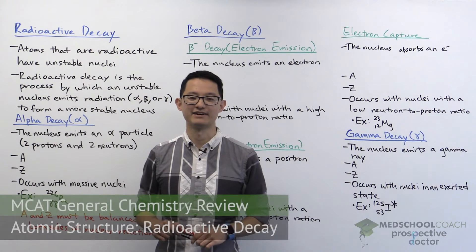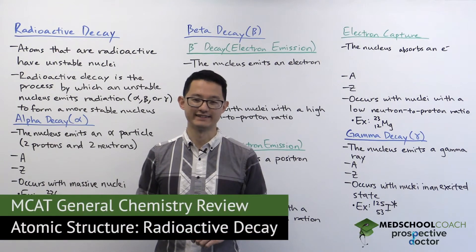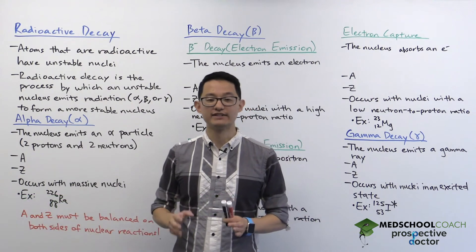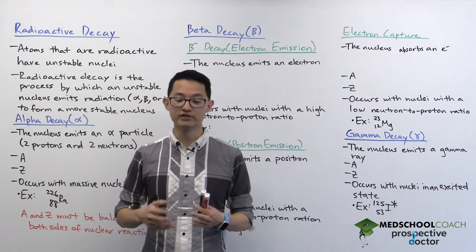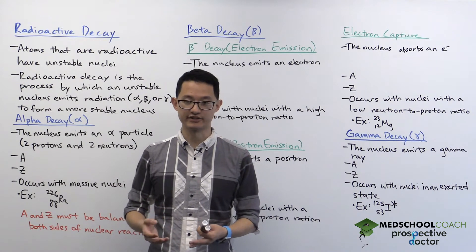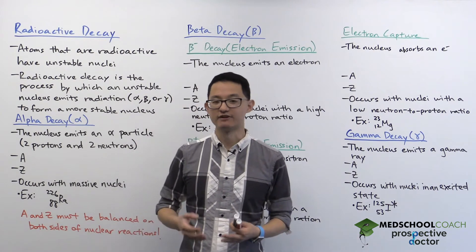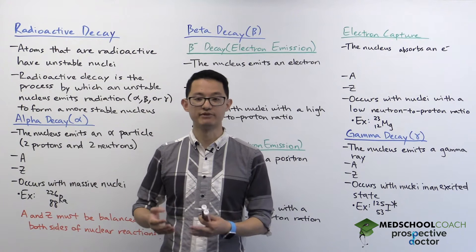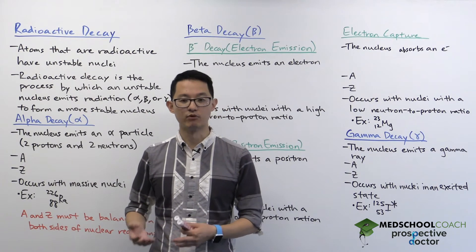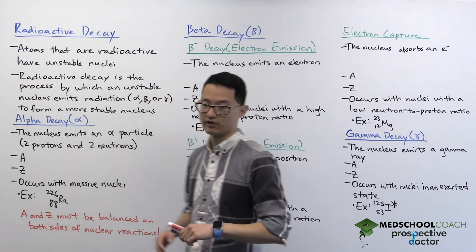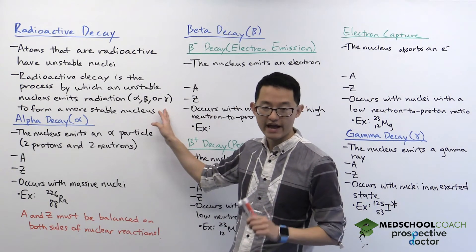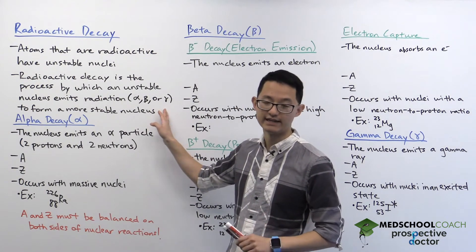Our next topic on atomic structure is radioactivity. Atoms that are radioactive have unstable nuclei. To form more stable nuclei, they need to emit radiation. Radioactive decay refers to this process of unstable nuclei emitting radiation to form more stable nuclei. For the MCAT, there are three types of radiation you are going to want to know about: alpha, beta, and gamma.